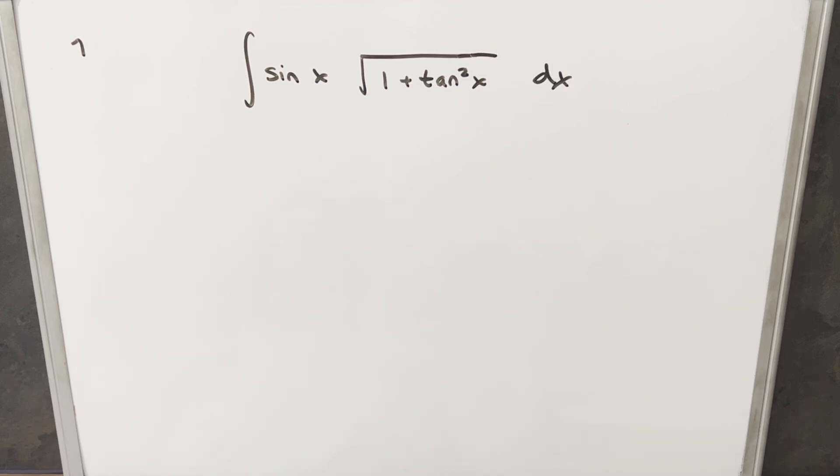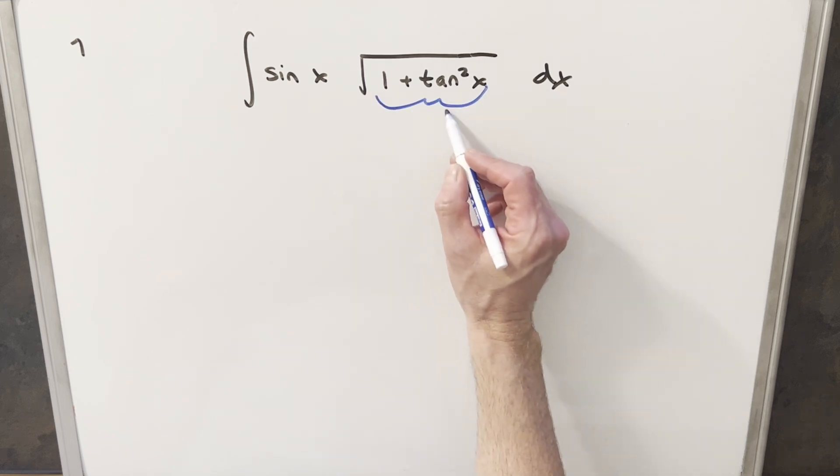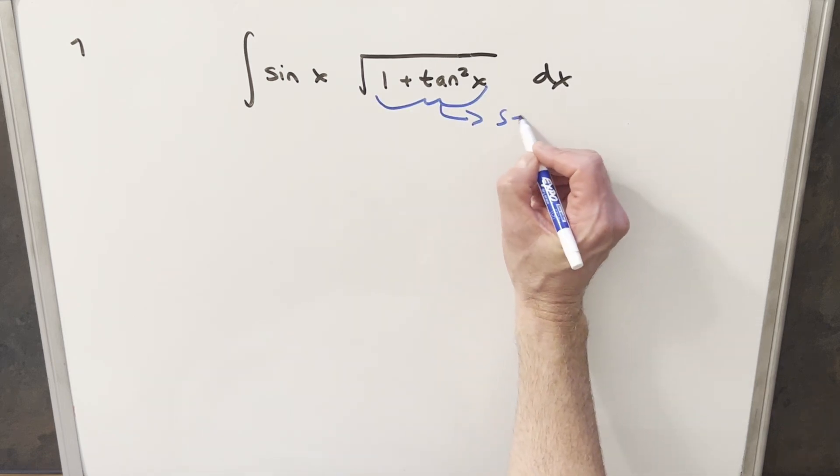So to get started, for my first step, I want to notice that 1 plus tan squared x, we can use the identity and write this as secant squared x.